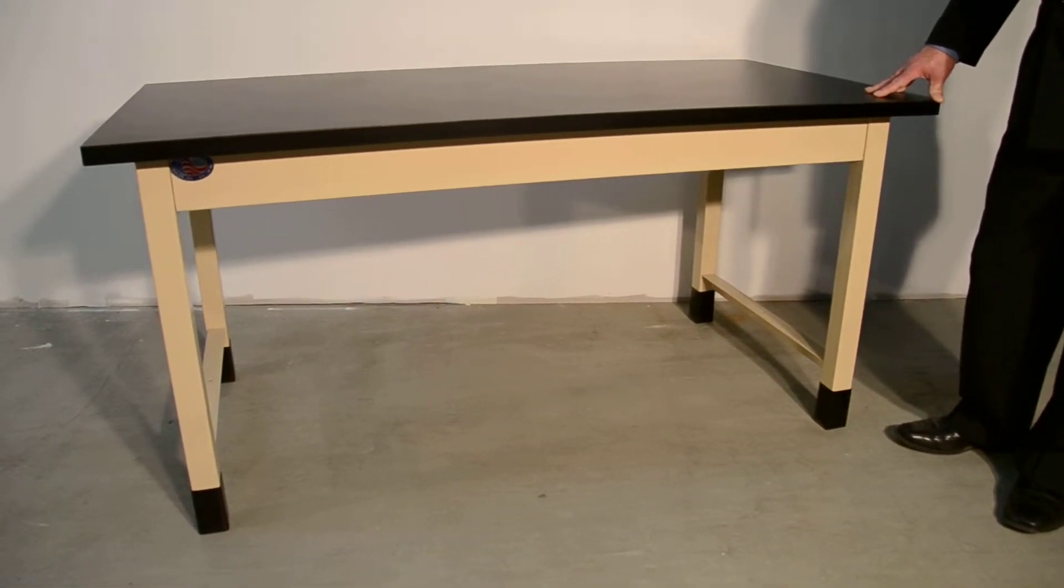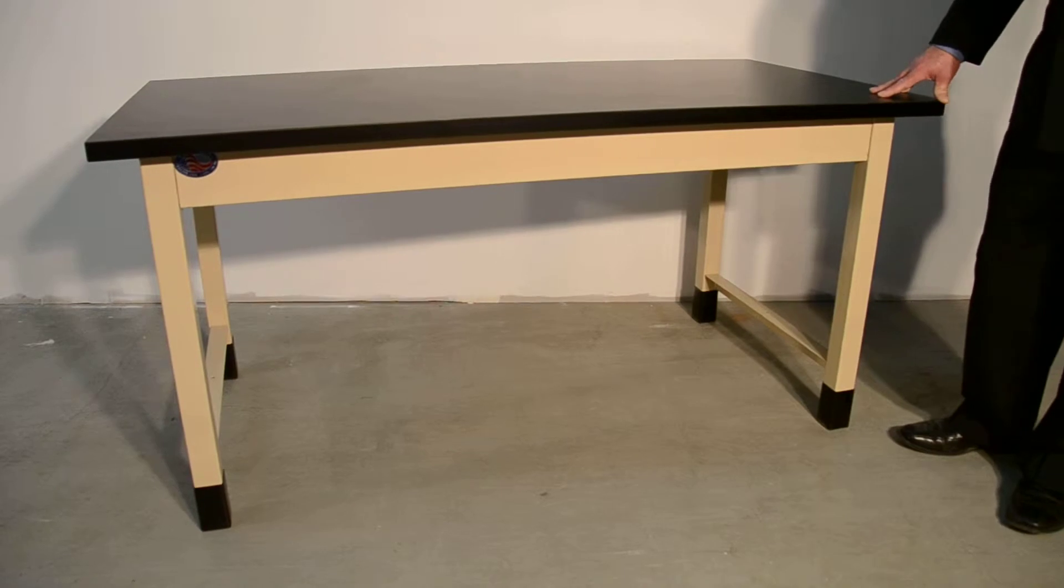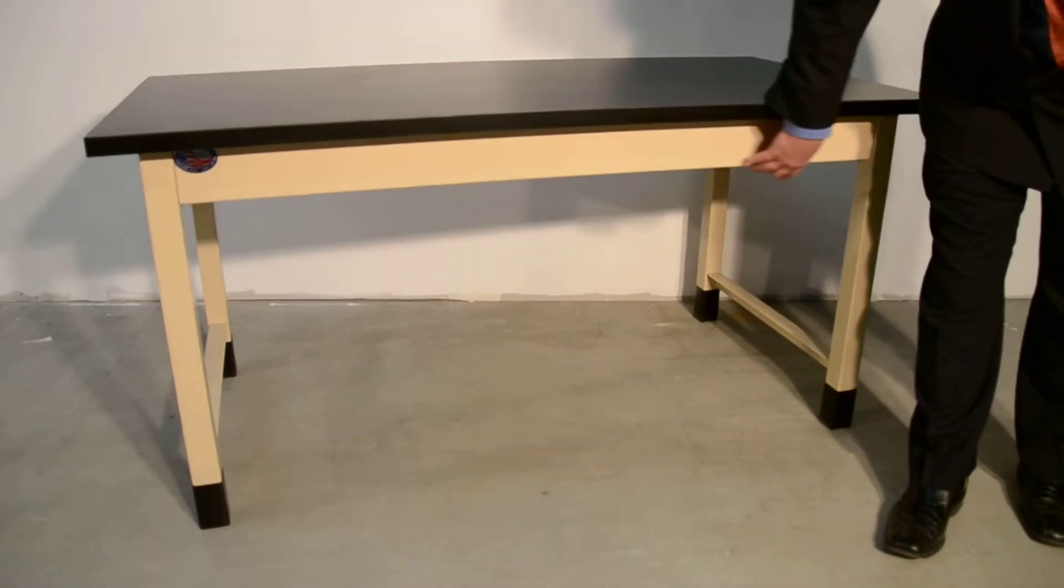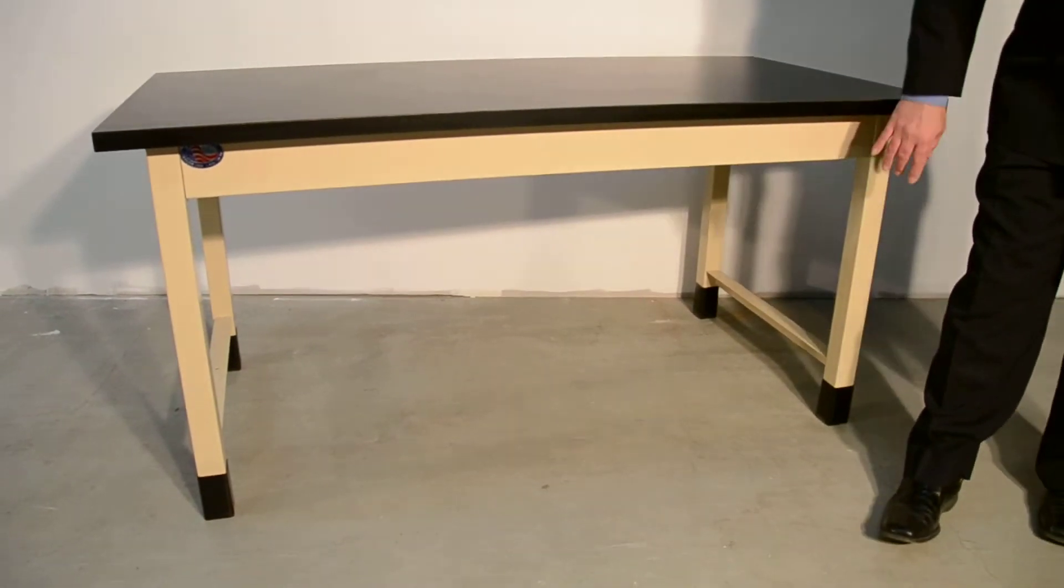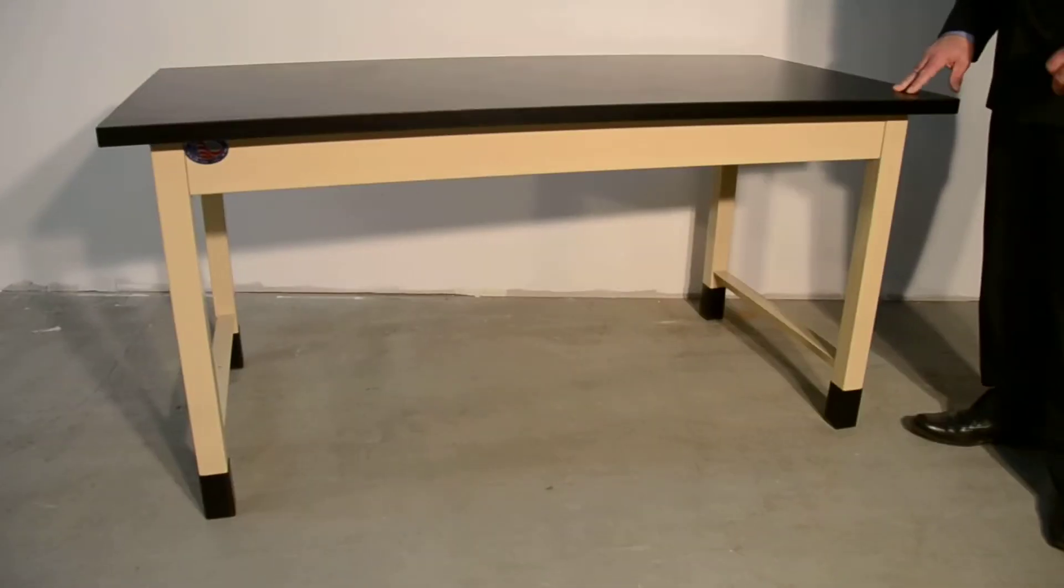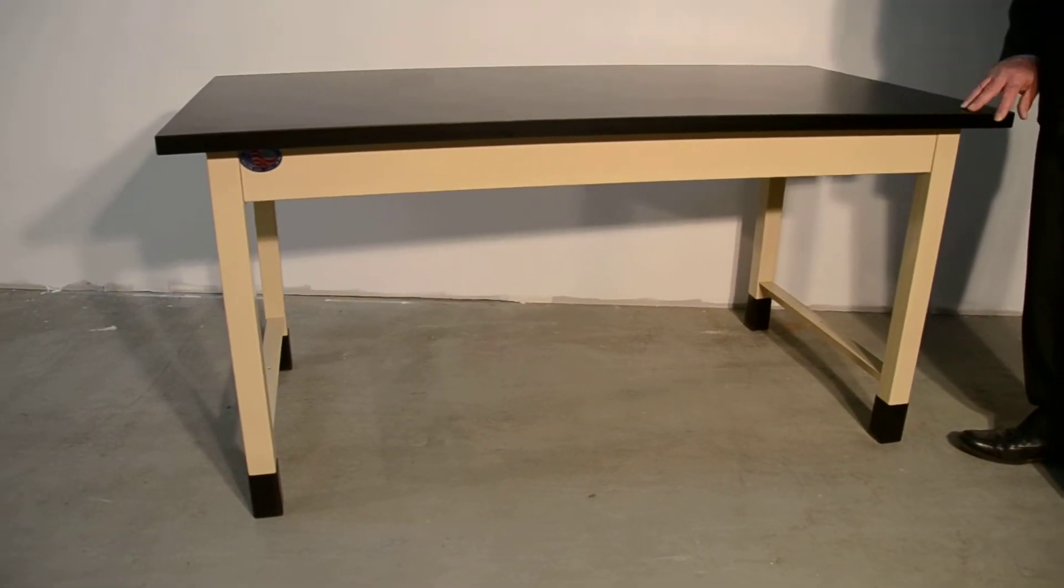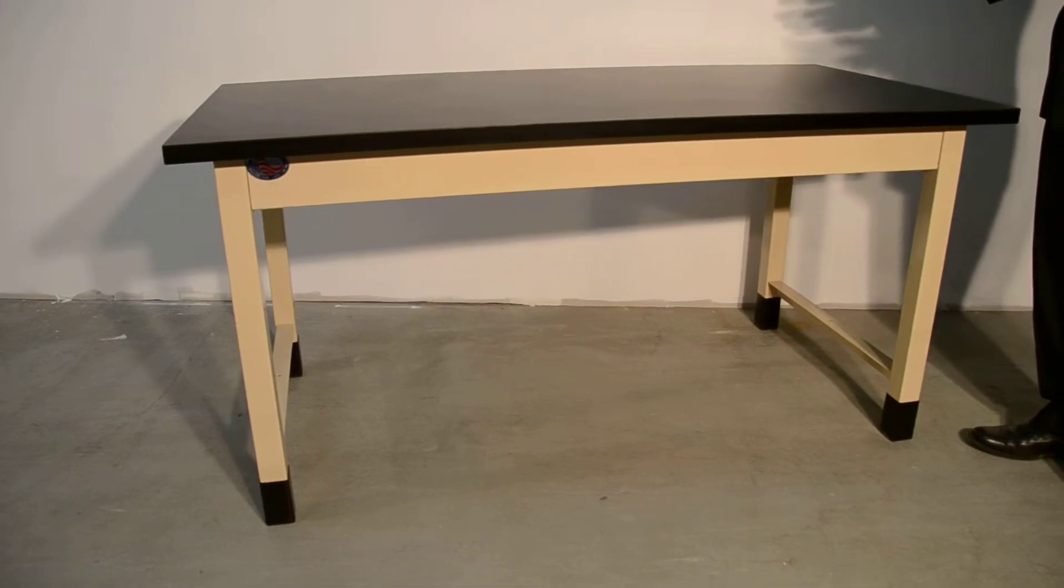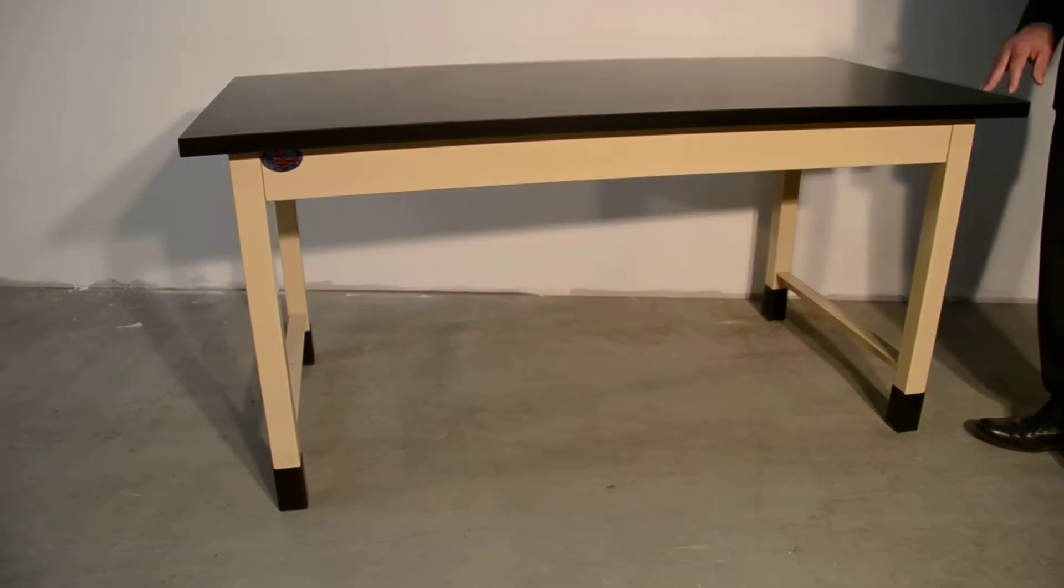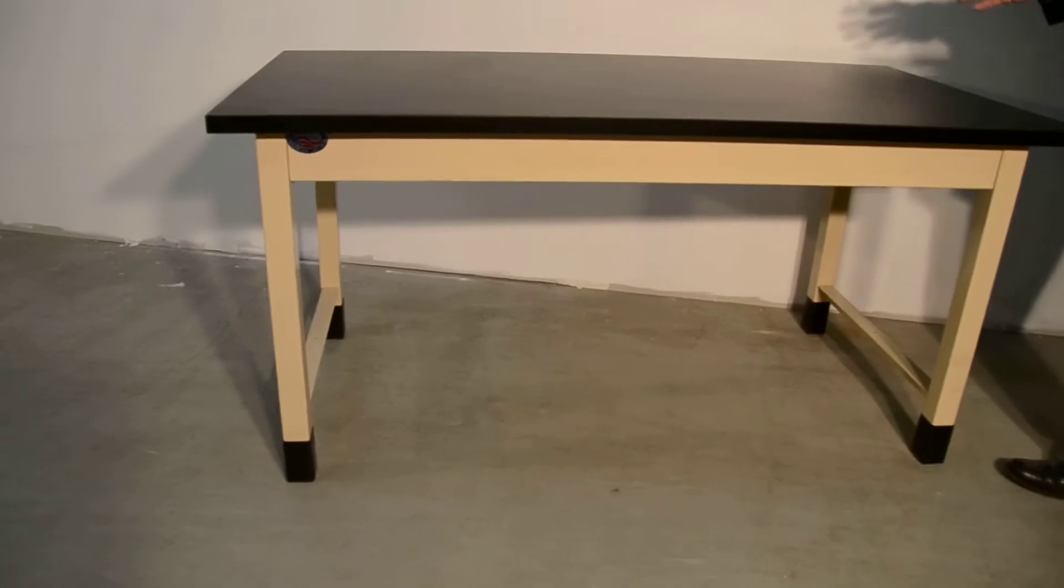Some of the nice features on this workbench that make it ideal for laboratories is it has a 4-inch apron all the way around on all four sides. What this allows you to do is either sit in the front or the back of this workbench. So if you want to put it into a classroom setting, or if you want to put equipment on it that you need to access from both sides, you can easily do that.